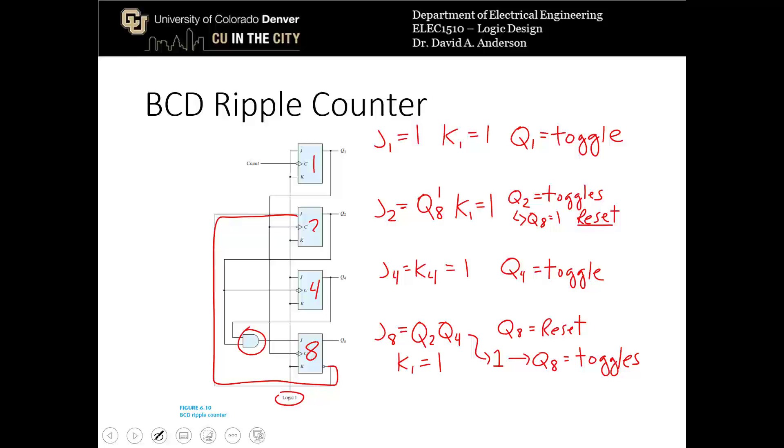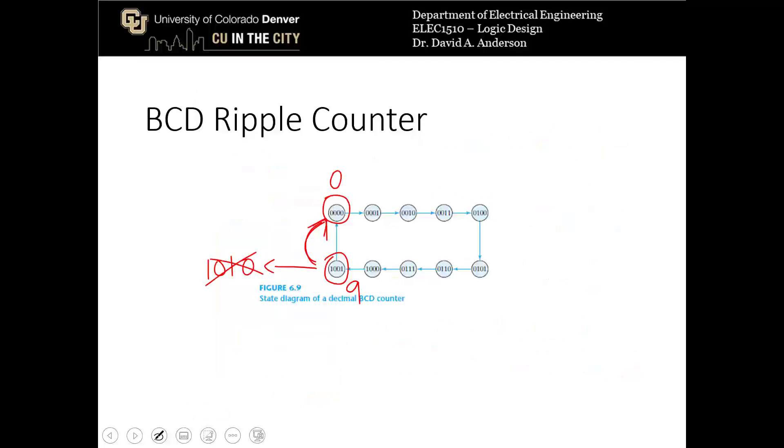So the clock connections are a little bit interesting as well. The Q1 output is the clock for JK flip-flop number 2 and JK flip-flop number 8. And then Q2 is the clock for JK flip-flop 4. The counter is the clock for the first one. So again, the derivation of this is fairly complicated, but this set of inputs and clocks is going to produce the BCD ripple counter.